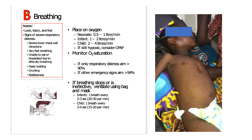If the child only has respiratory distress, target saturations above 90%. If they have other emergency signs such as shock or coma convulsion, target greater than 94%. If breathing stops or is ineffective, ventilate using a bag valve mask — for infants, one breath every two to three seconds; for a child, one breath every three to four seconds.